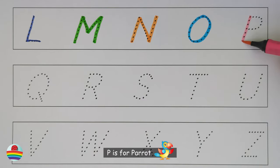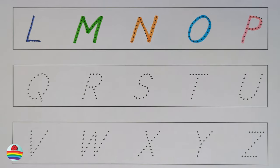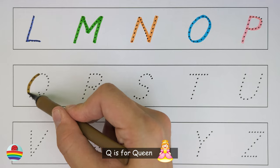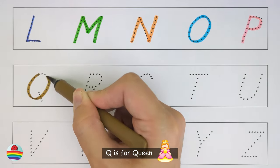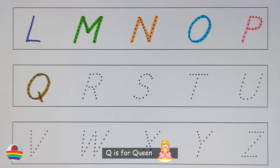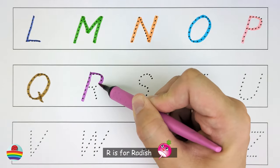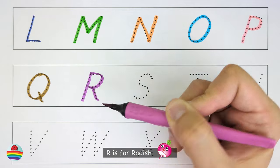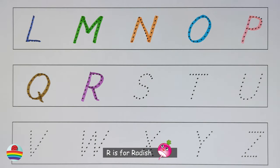P. P is for Parrot. P. Q. Q is for Queen. Q. R. R is for Radish. R.